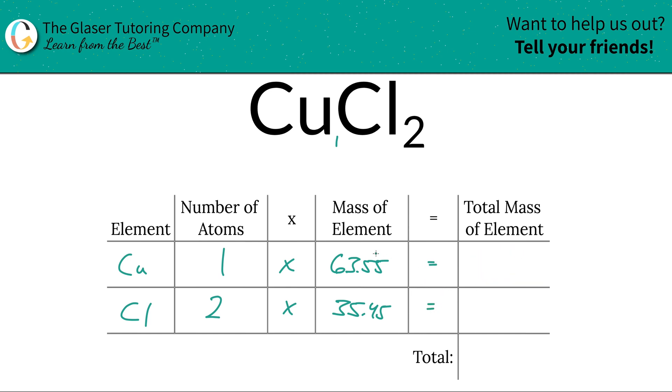Then to find the total mass of the element, all we simply have to do is take the number of atoms and multiply it by the mass of that element. And this is 63.55 for copper. And then for chlorine, you've got to take 2 and multiply it by its weight. And that works out to be 70.90.